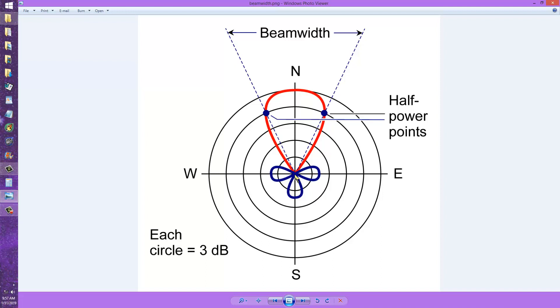So it's a Yagi. And the major lobe looks like this because the Yagi is pointed north. The half power points, or the points at which the signal is three decibels down with respect to the maximum signal, are these two points right here. As I said earlier, it looks like maybe about 50 degrees. This might be characteristic of a three or four element Yagi.